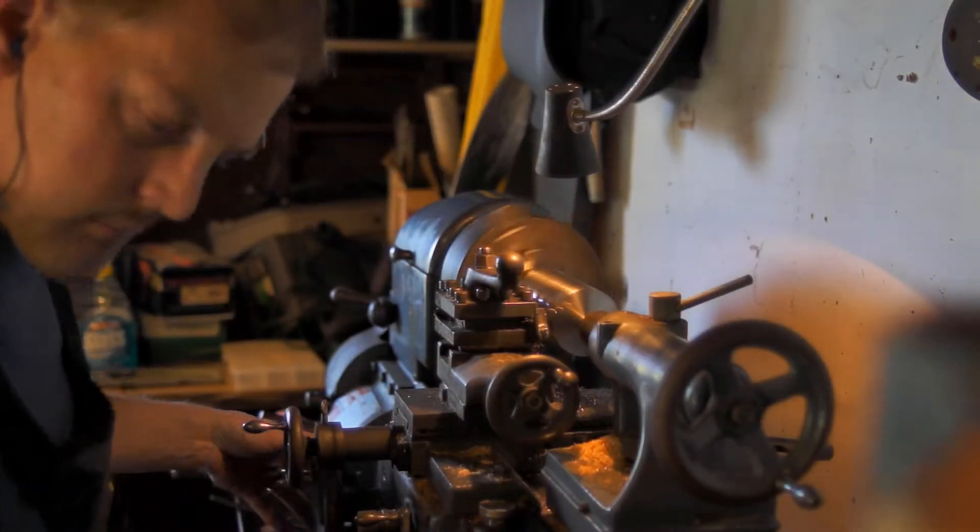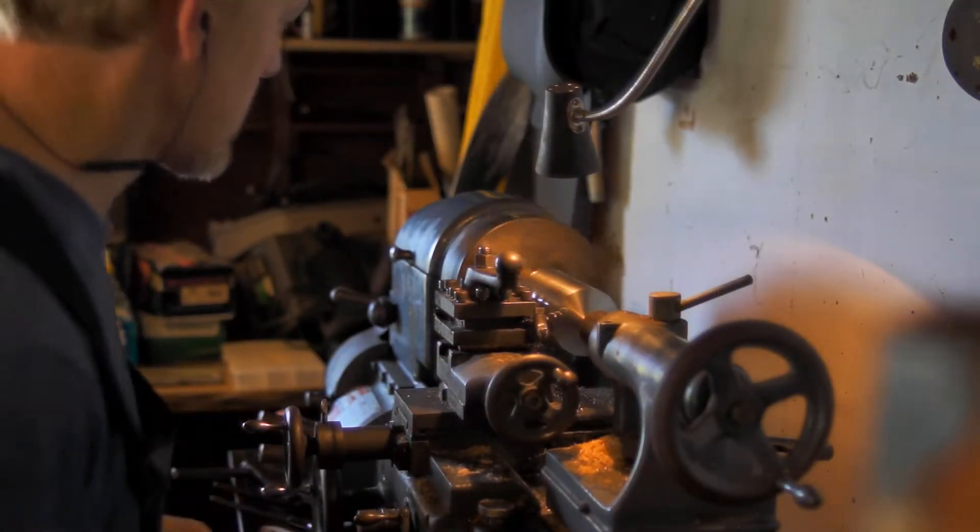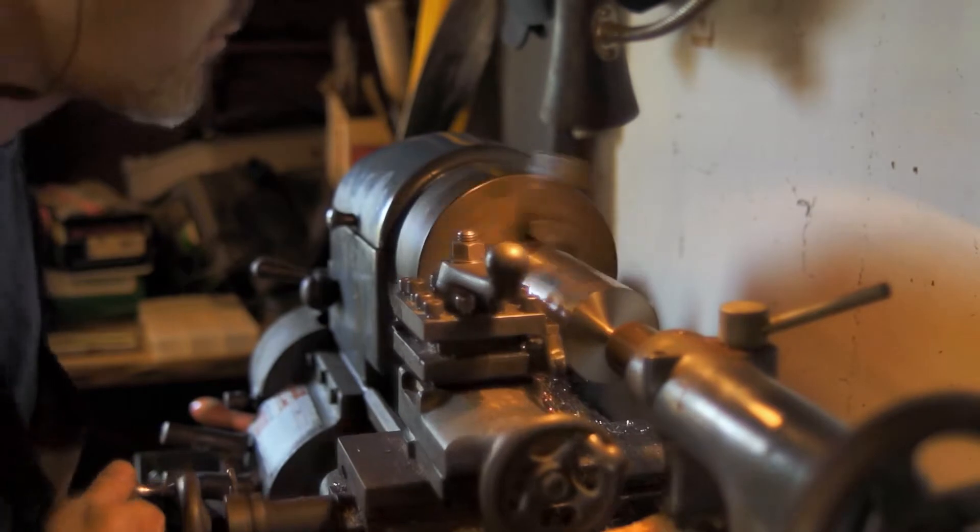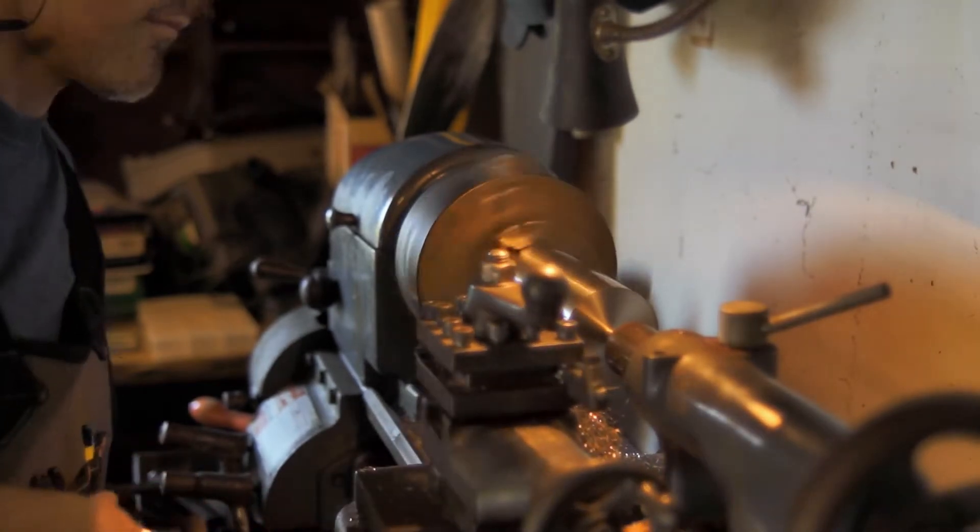So I'm machining this shaft out of a piece of solid stainless steel bar. It starts out about two and a half inches in diameter, and I need to machine it down from the bearing to about an inch and a half.